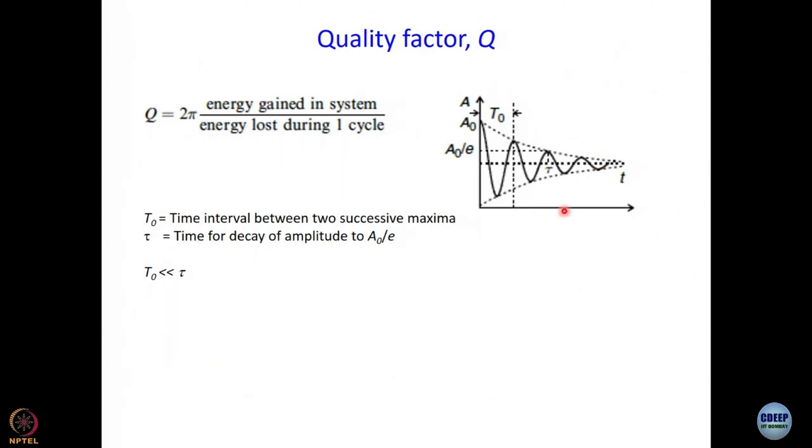We will take things axiomatically, but these are not all that difficult. Something like this is an oscillation and there is a decay. This figure here is not really to scale. Because this T0 that you see, T0 is basically the time difference between two maxima, time interval between two successive maxima.